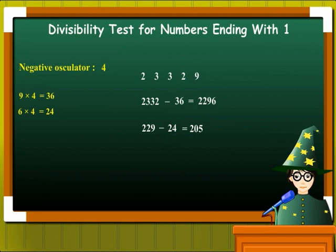What is the last digit of this number? Obviously, 5. Let's multiply this with the negative oscillator once more. So 5 into 4 gives us 20. And we subtract 20 from the remaining digits. 20 minus 20? Very simple, 0.